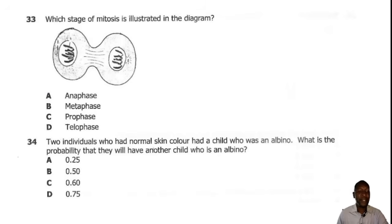Question 33. Which stage of mitosis is illustrated in the diagram? We have a cell here which is dividing and the cell has two nuclei. So the cell is at the stage of telophase. The correct answer is D.